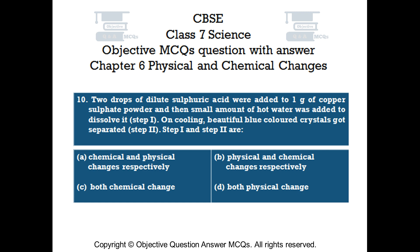Question number 10. Two drops of dilute sulfuric acid were added to 1 gram of copper sulfate powder, and then a small amount of hot water was added to dissolve it. On cooling, beautiful blue colored crystals got separated. Step 1 and Step 2 are: Option A: Chemical and physical changes respectively. Option B: Physical and chemical changes respectively. Option C: Both chemical change. Option D: Both physical change.